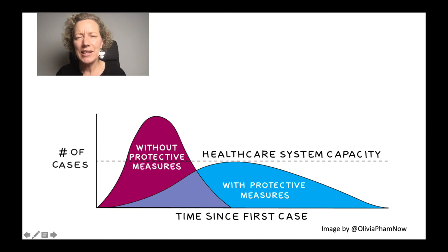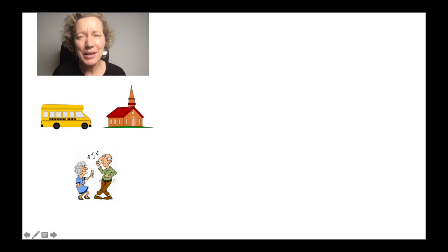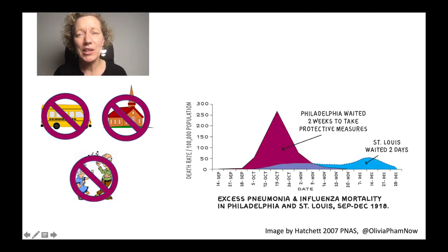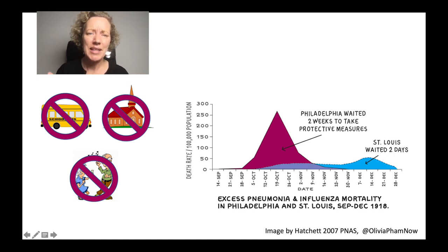During the 1918 Spanish flu epidemic, some cities were much faster with cancelling events and closing their schools. And that saved a lot of lives. This image shows the number of people who died in the 1918 Spanish flu epidemic in Philadelphia and St. Louis.